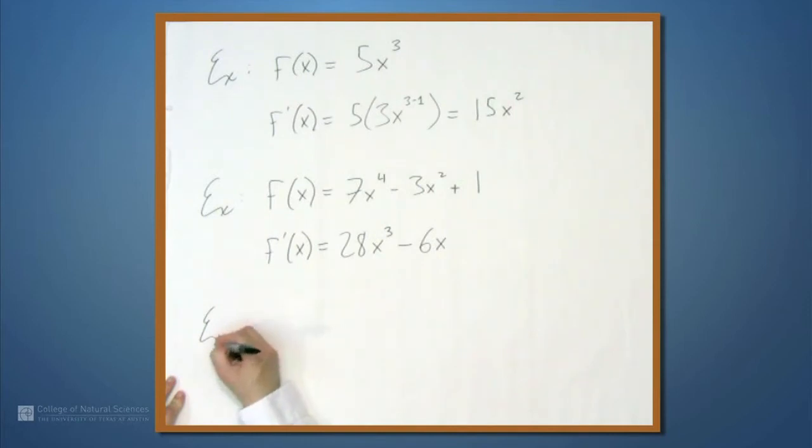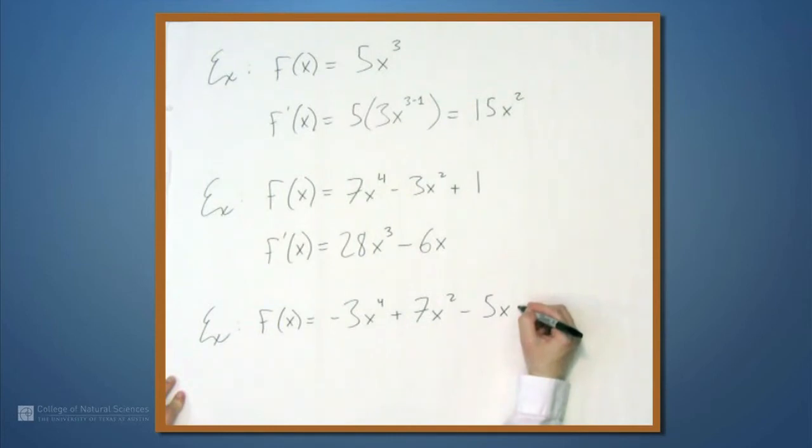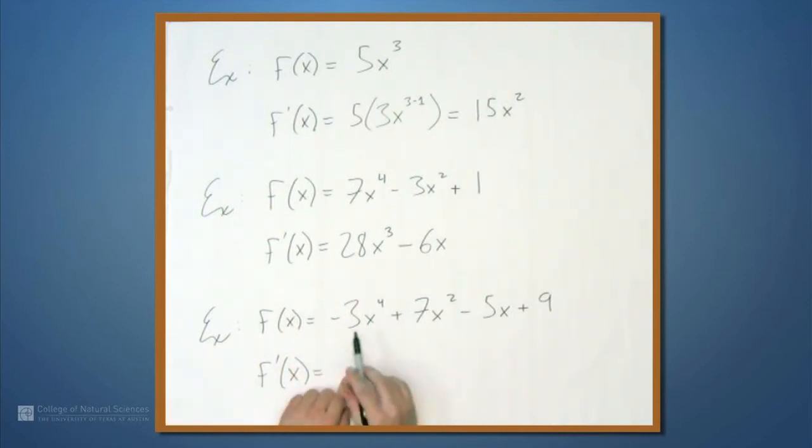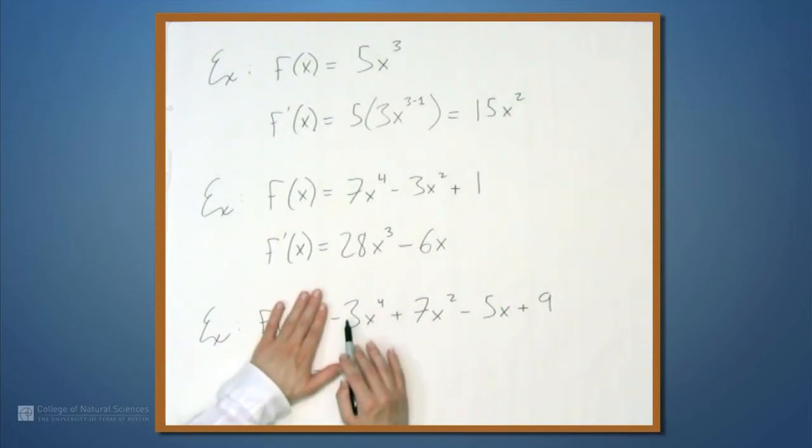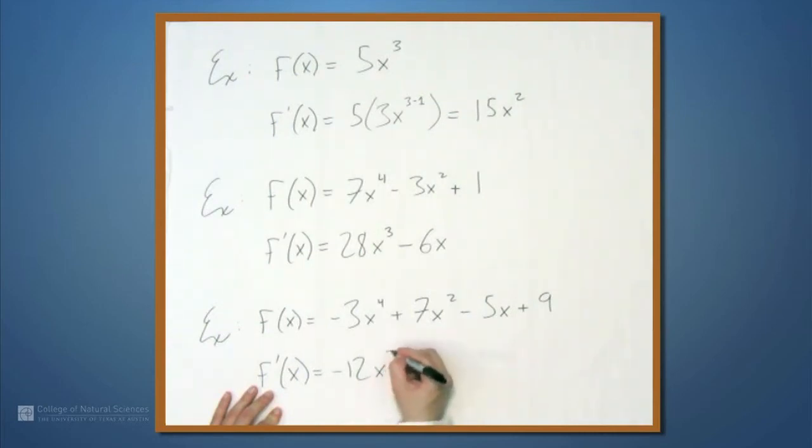Let's do one more example. Let's say f of x is negative 3x to the 4th plus 7x squared minus 5x plus 9. Then f prime of x is going to be what? Well, just like before, we'll differentiate this term by term. So negative 3 times x to the 4th. When we differentiate x to the 4th, we end up with 4x cubed. So that 4 out front multiplies by negative 3, and we get negative 12. That's negative 12x cubed.